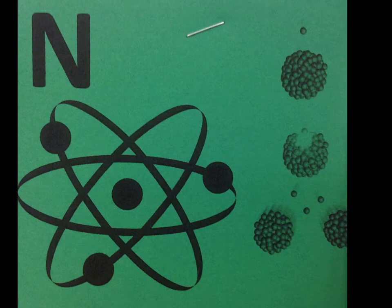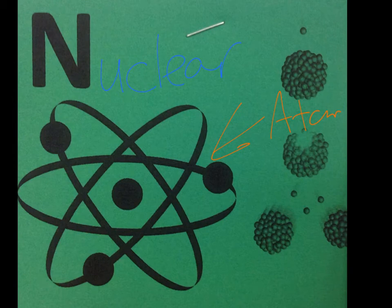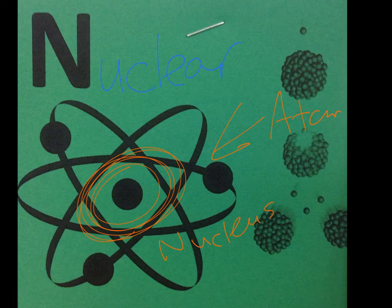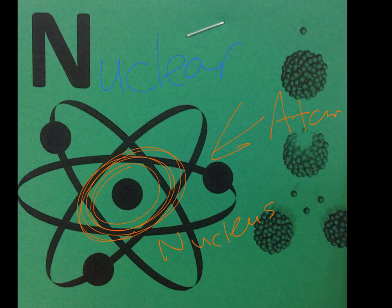Here we have the N for nuclear energy. So right here we have a picture of an atom. We talked about atoms when we were discussing elements and compounds — atoms make up everything around us, so the element of oxygen is made of oxygen atoms, hydrogen is made of hydrogen atoms, and so on. The center part of the atom, which is called the nucleus — all the energy found right in that center part of the atom is known as nuclear energy.